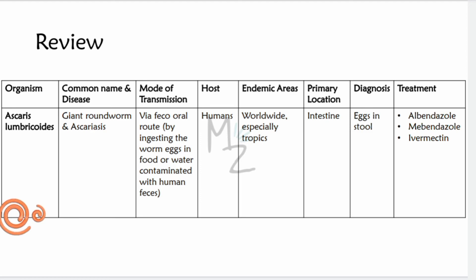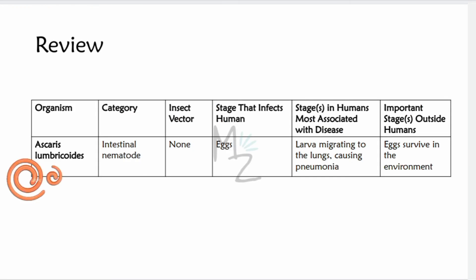Review: the organism is Ascaris Lumbricoides, commonly known as giant roundworm, responsible for causing ascariasis. Transmission is via the fecal-oral route or by inhalation of desiccated dry eggs. Definitive hosts are humans; there are no intermediate hosts. Endemic areas are worldwide, especially the tropics. Primary location of infection is the intestine. Diagnosis is based on finding eggs in the stool. Treatment is albendazole, mebendazole, and ivermectin. It has no insect vector. The infective stage is embryonated eggs; the stage most associated with disease is larvae migrating to the lungs causing Ascaris pneumonia. Outside humans, eggs survive in warm, moist soil.